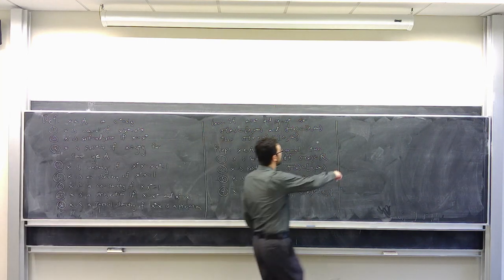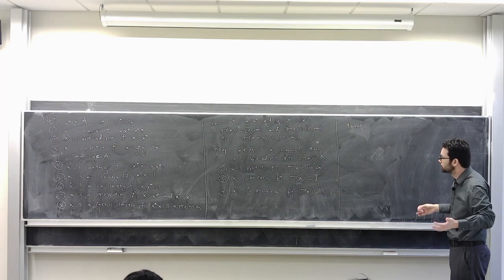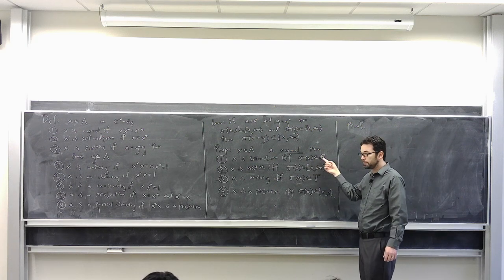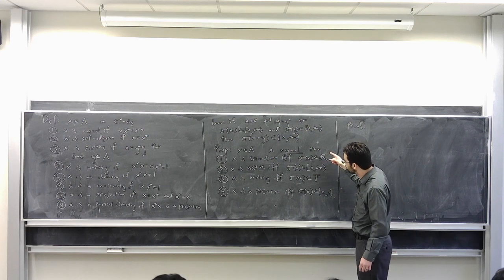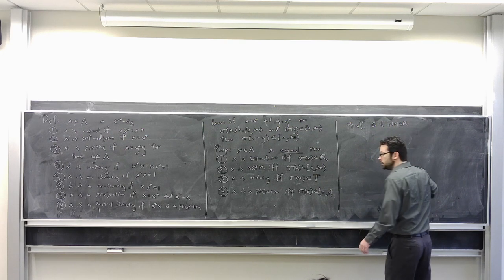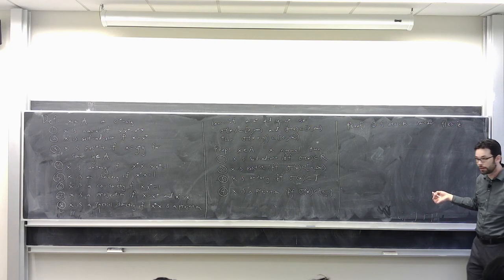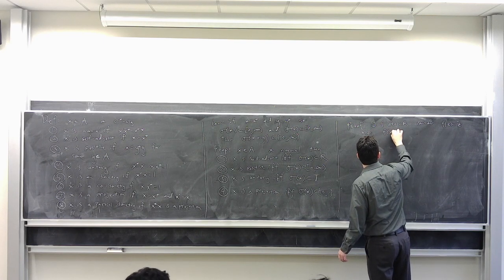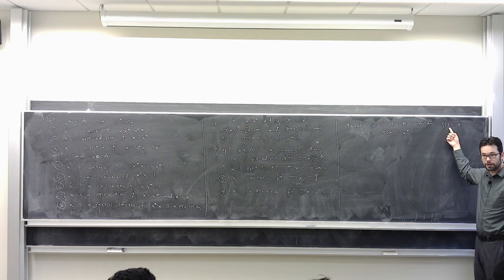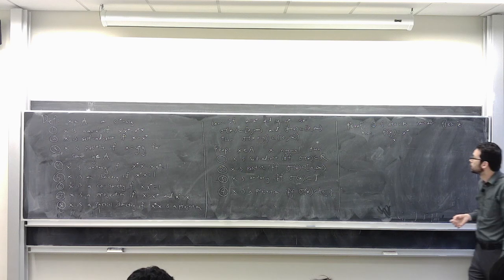Let's prove this. Almost all of these are easy with the powerful tool of functional calculus. We already proved that if you're self-adjoint, then the spectrum is contained in the reals. Conversely, if the spectrum is contained in the reals, consider the function F(z) = z̄. Then F(X) is on one hand X*, but on the other hand F restricted to the real spectrum equals the identity function z, so F(X) = X. Therefore X* = X.